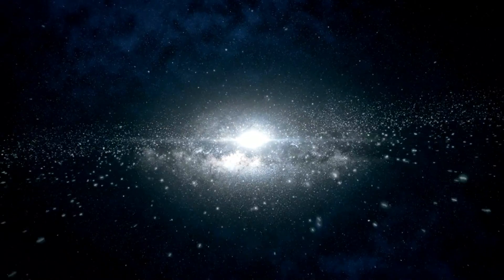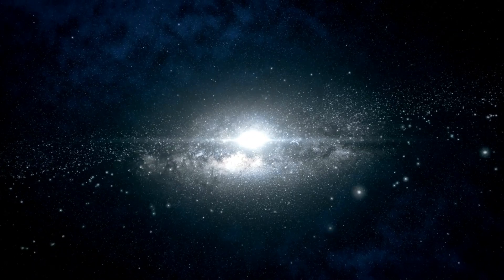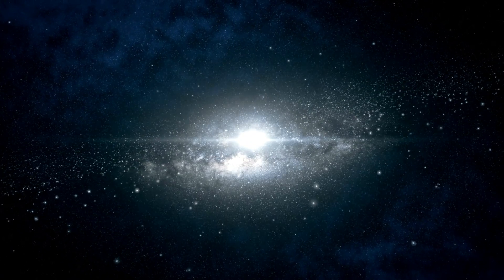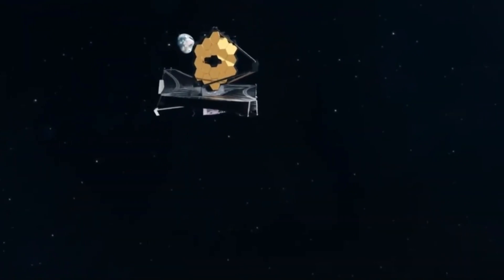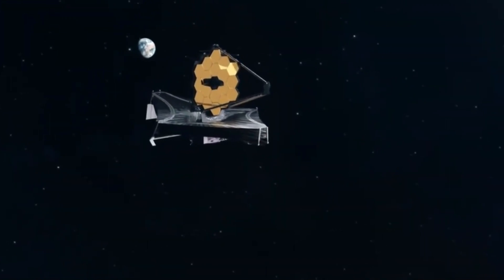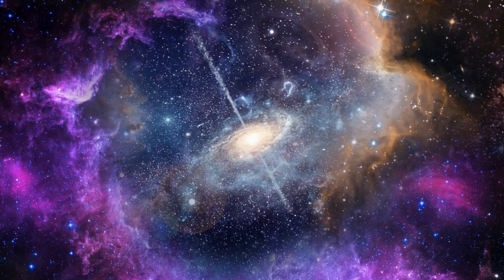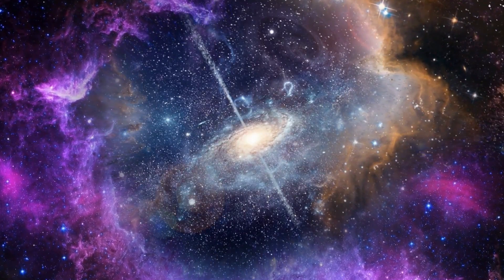Einstein always knew the answer to another interesting question. Even though he believed in the Big Bang theory, he was sure that no matter how good our telescopes are, we would never be able to see the beginning and end of the world. What does this have to do with the void that the James Webb telescope found? How did Einstein come up with this idea?